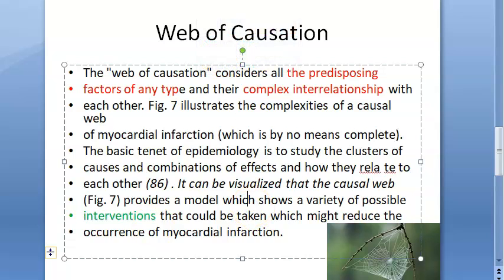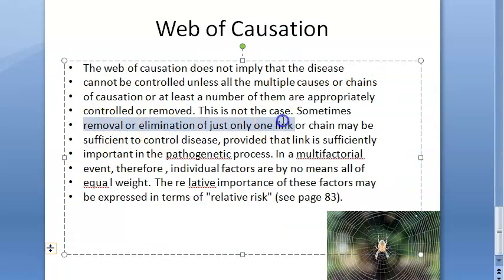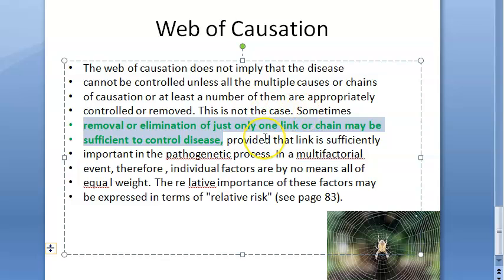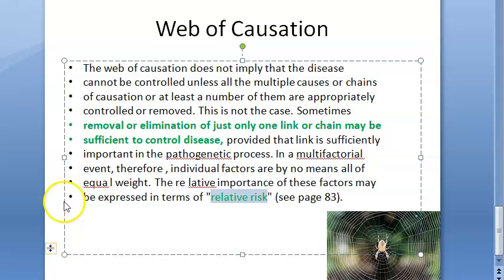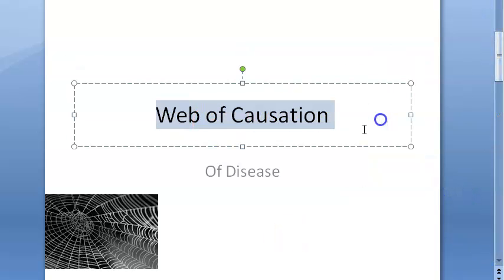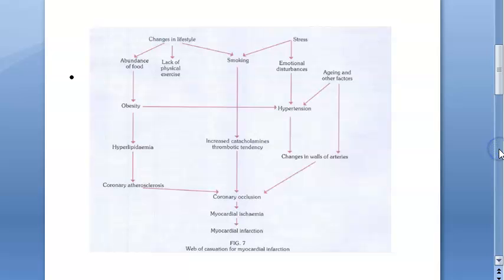Just removing one link or chain may be sufficient to control the disease. You don't have to eliminate all the links — eliminating at least one may be enough. If you know the relative risk of each factor, for example if smoking has the highest relative risk, you can target that specifically.